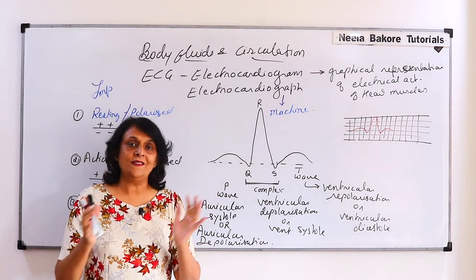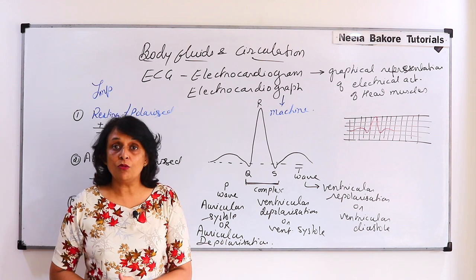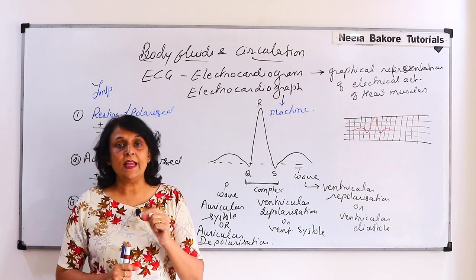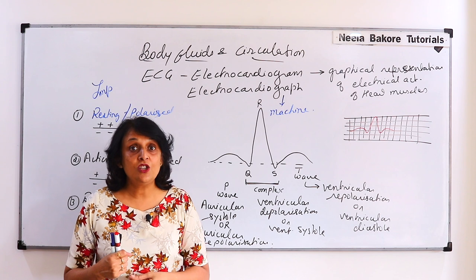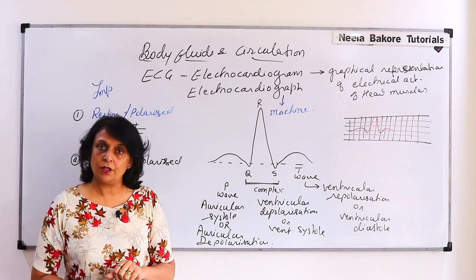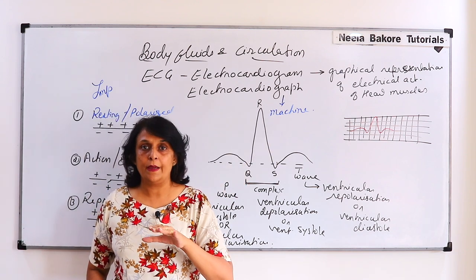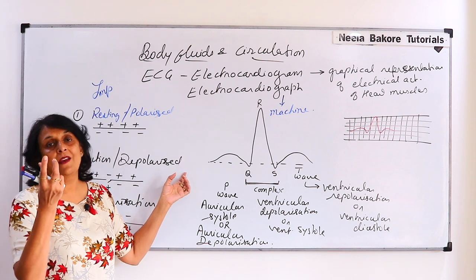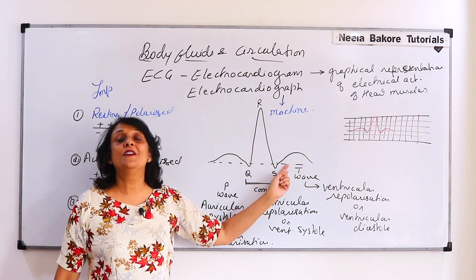The ECG machine uses leads to record. These leads are placed on the left hand wrist, ankles, and chest. Depending on what machine is being used, the number of leads can be different. The leads help detect the charge movement in these conditions, and the machine plots this as a graphical representation.